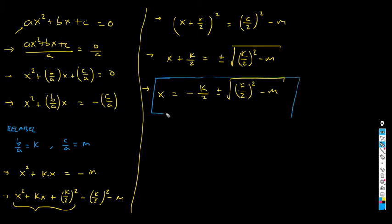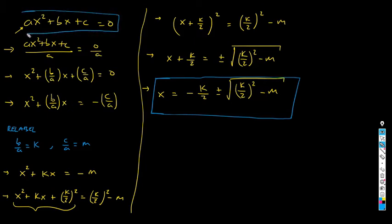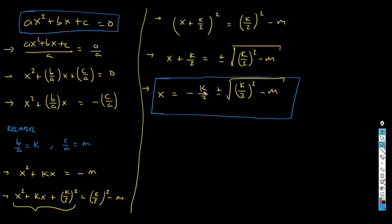Let me tell you why. I know that this doesn't look like the quadratic formula, but let me tell you why I'm telling you that we are done. What is the purpose of all that we're doing? We're trying to solve this equation — that is our goal — and we have done such a valid process and arrived at the isolation of x. x equals minus k over 2, plus or minus the square root of k over 2 squared minus m. Do we know k and m? Yes. Because k is simply b over a, and m is c over a, which are your original constants.